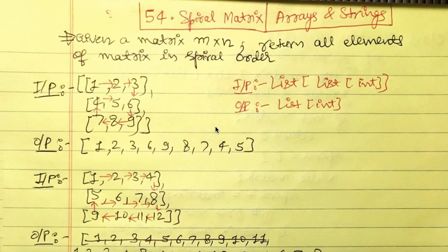Welcome to this video. Here we will talk about code problem 54, titled Spiral Matrix. This is from the category arrays and strings. We are given a matrix and we have to return all elements of the matrix in spiral order.